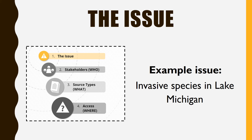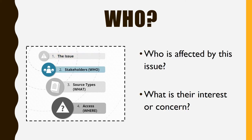First, let's review the stakeholders concept by imagining we're working on the issue of invasive species in Lake Michigan. Let's brainstorm who is affected by the issue of invasive species in Lake Michigan and what each stakeholder group's interests or concerns are. You should come up with at least five stakeholder groups. Who affects this issue or who is affected by it?